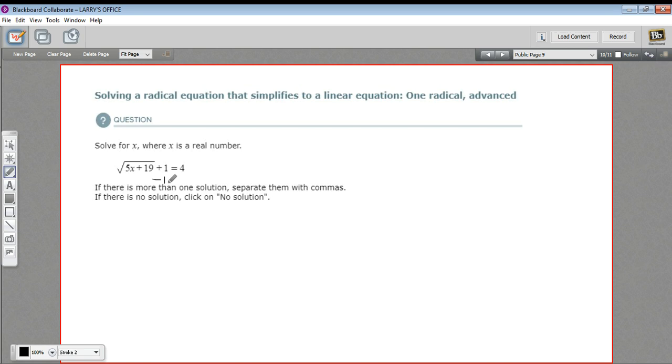I can do that by just subtracting 1 from both sides of the equation. If I do that, I'll get the square root of 5x plus 19 on one side, and 4 minus 1, which is 3, on the other side.